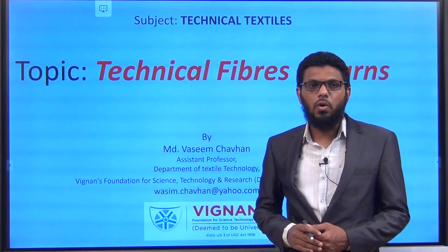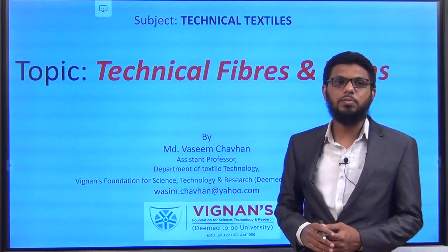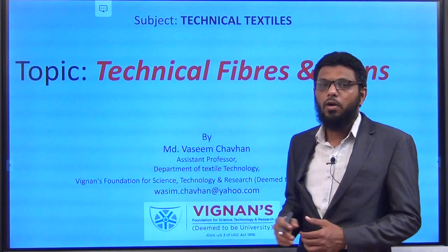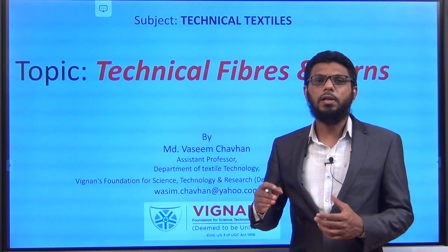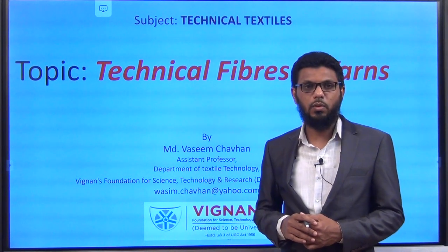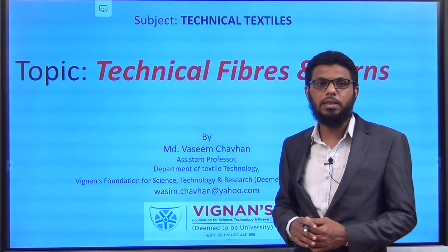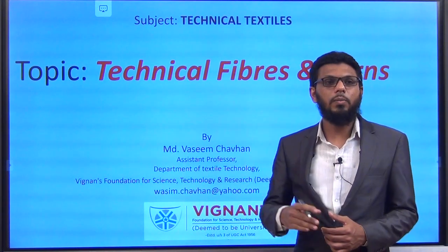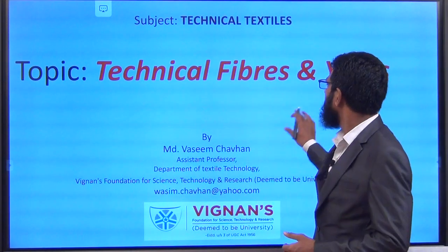As textile students, you have already studied the different types of fiber and different types of yarn and their manufacturing. Now in this subject we will see and discuss fiber and yarn from their function point of view, or from their technical properties point of view, and we will try to relate it with the final properties of the technical product. Unless and until you don't know the properties of fibers and yarn, you cannot select the specific fiber and yarn for a particular application.